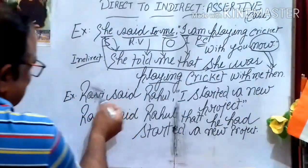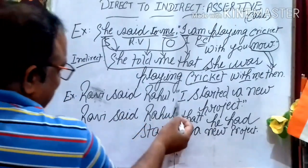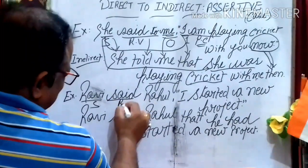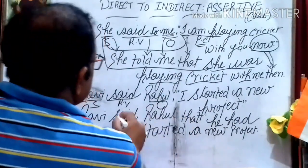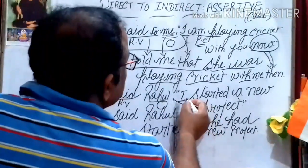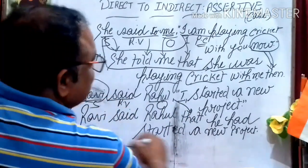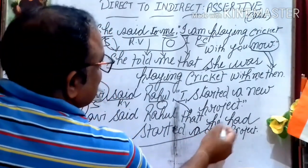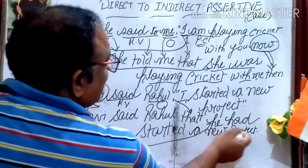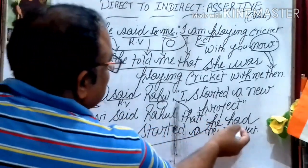Next example: 'Ravi said to Rahul, I started a new project.' Here 'Ravi' is the subject, 'said to' is the reporting verb, and 'Rahul' is the object. The inverted comma is replaced by 'that'. 'I' is first person and changes according to the subject — since Ravi is a boy, 'I' becomes 'he'. 'Started' is simple past, which changes into past perfect 'had started'. So the final conversion is: 'Ravi told Rahul that he had started a new project.'